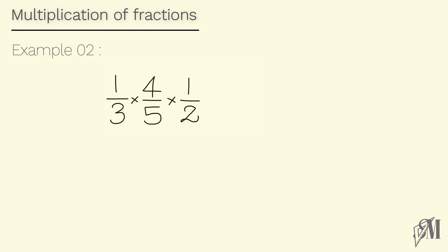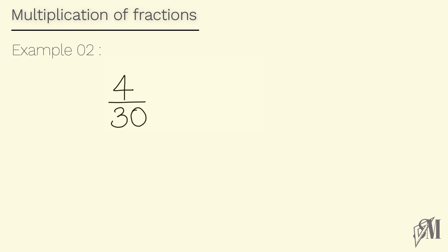Now look at this example with three fractions — we follow the same procedure. Multiply the numerators first: 1 into 4 into 1 is 4. Then the denominators: 3 into 5 is 15, and 15 into 2 is 30. So we have 4 over 30. This can be simplified — both 4 and 30 can be divided by 2, giving us 2 over 15. Therefore our final answer is 2 over 15.